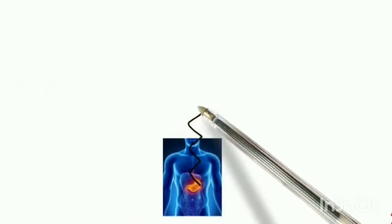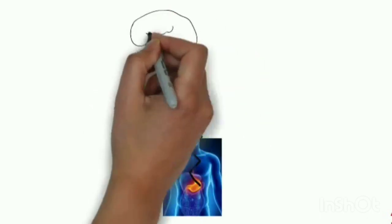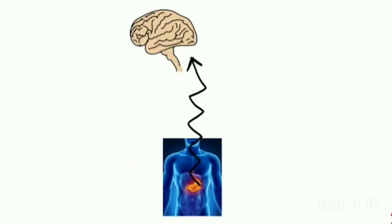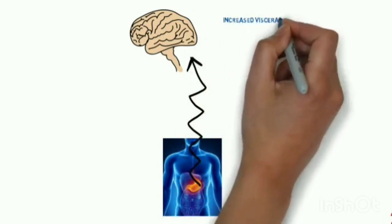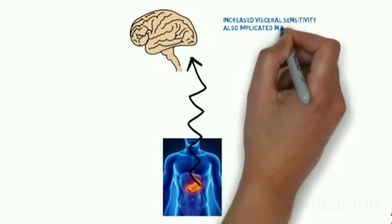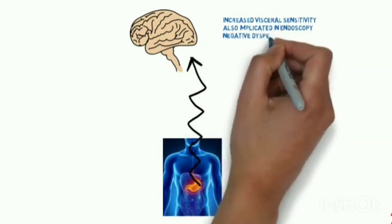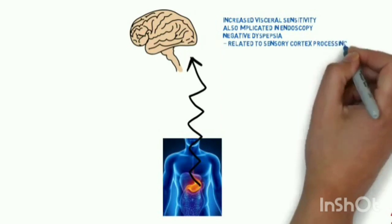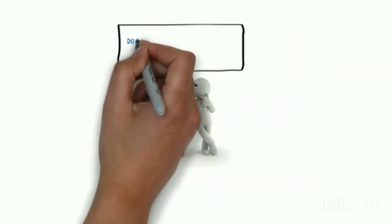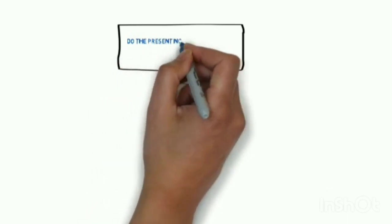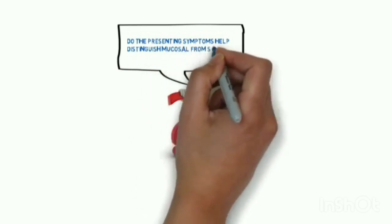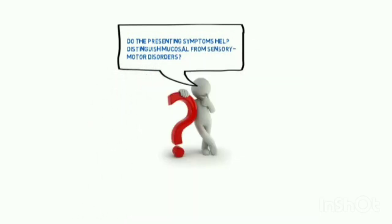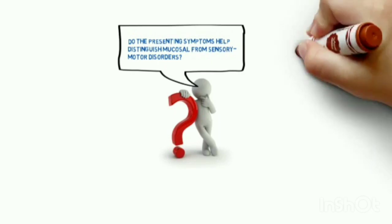GI disorders have a direct effect on the central nervous system. These effects include increased visceral sensitivity, also implicated in endoscopy-negative dyspepsia, related to sensory cortex processing. Do the presenting symptoms distinguish mucosal from sensory-motor disorders?